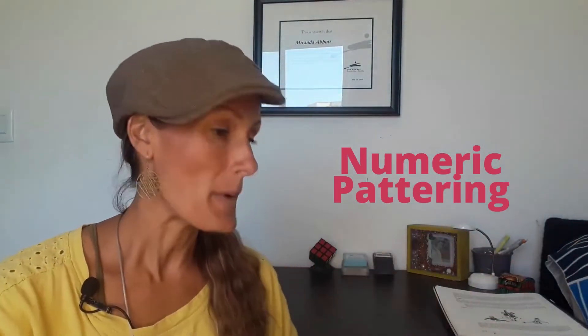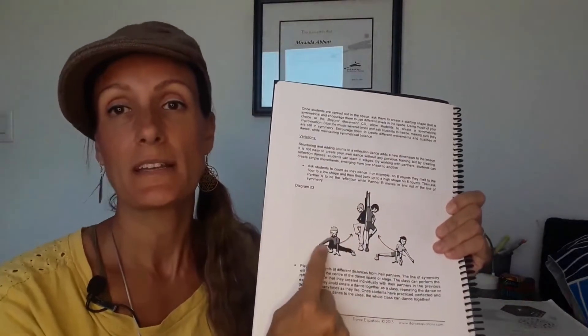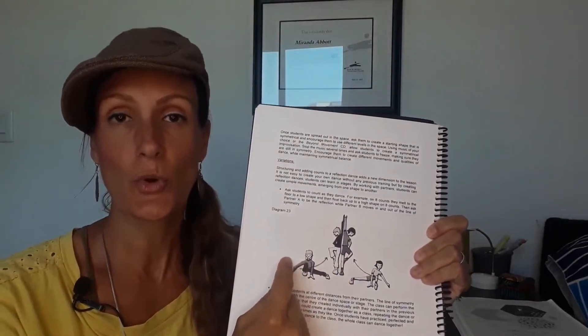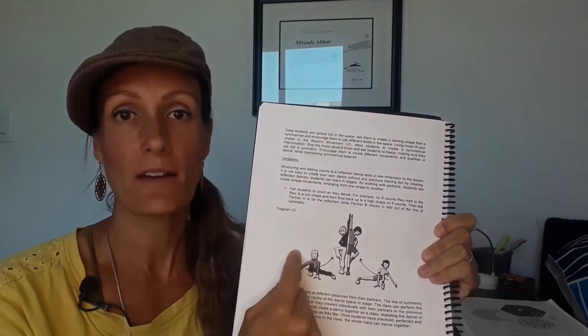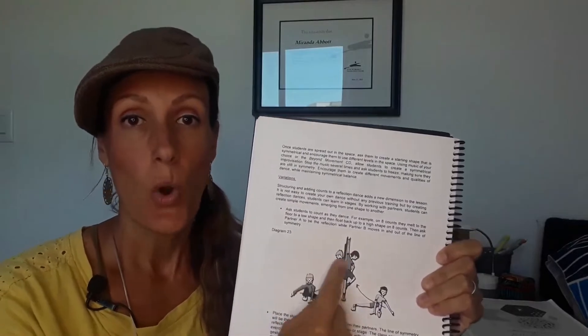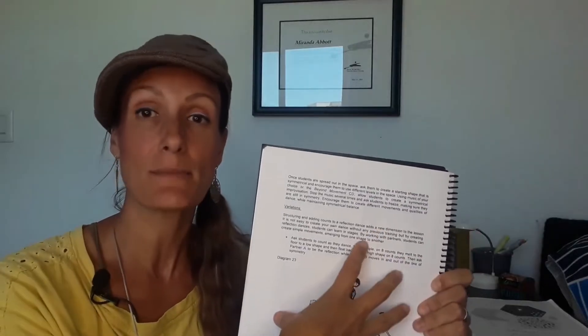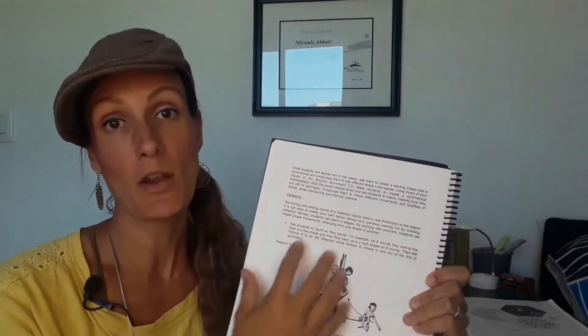We added in patterning and specifically numeric patterning. Something simple, for example, we did say eight counts in and eight counts out, divided by two: four counts, four counts, two counts, two counts, one count, one count. That's where we started with developing some movement based on symmetry and numeric patterning.